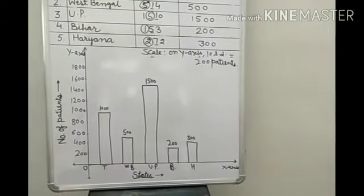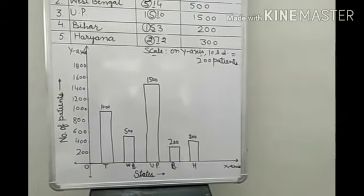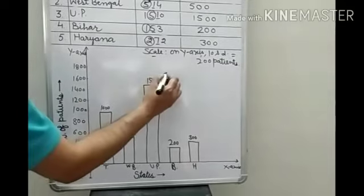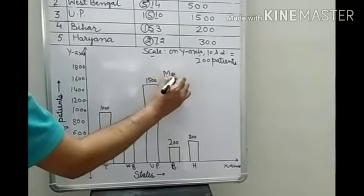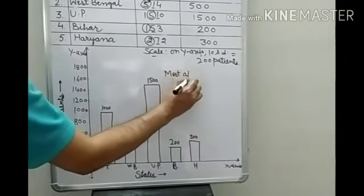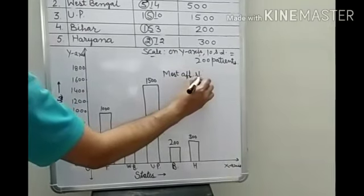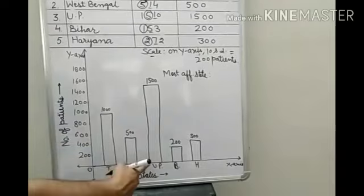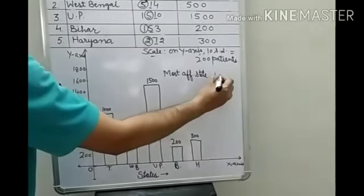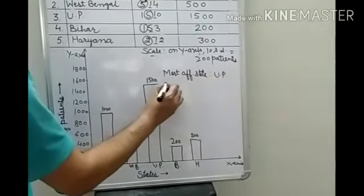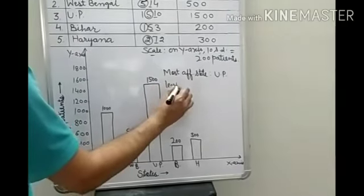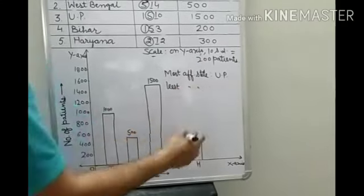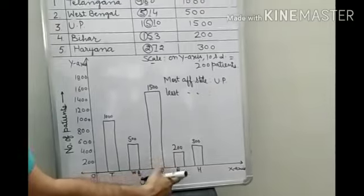Now we have to find the most effective state and least effective state. Here most effective state, which one is most effective state? Whose bar is maximum? That is UP, means Uttar Pradesh. And least affected state, whose bar is least? Whose least? That is Bihar.